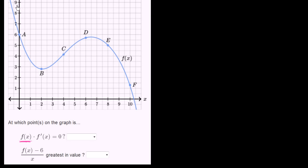We're plotting f of x on the vertical axis — we could call this graph y equals f of x. So at any point, does the y value of this curve equal 0? It's positive throughout, and while it is decreasing then increasing then decreasing, it does get to 0 at one point, but that's not one of the labeled points. They want us to pick one of the labeled points.